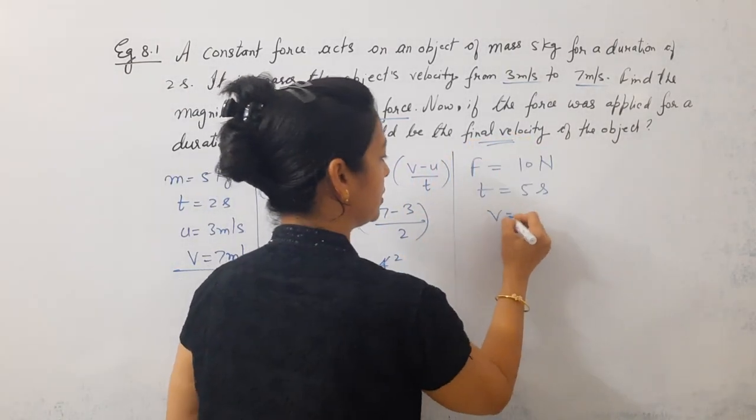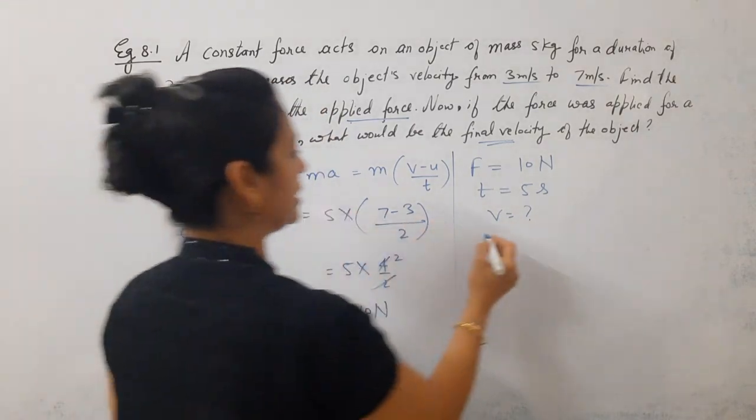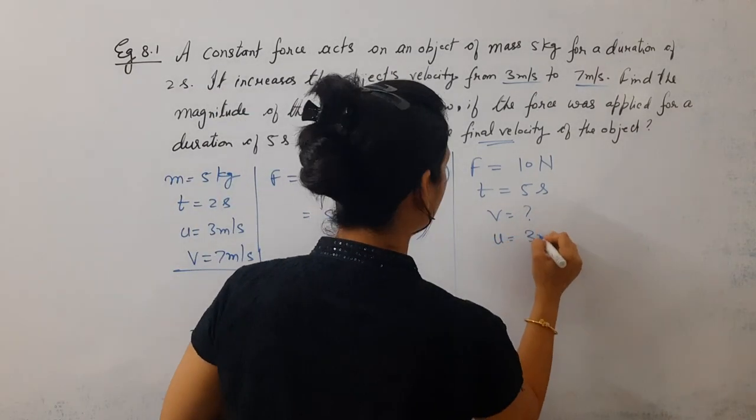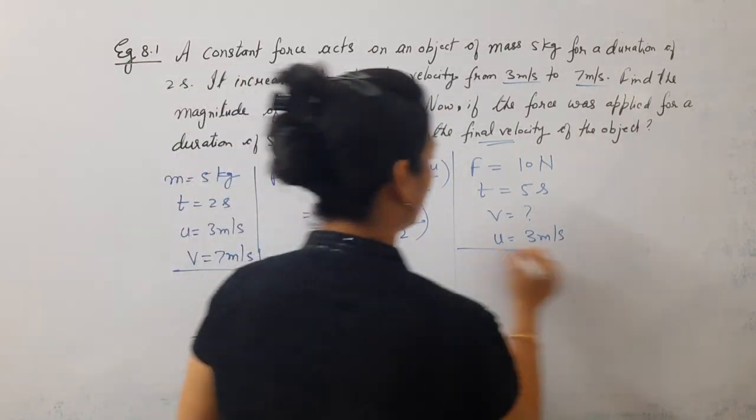What will be the final velocity? This means the initial velocity will be the same as before. What was the initial velocity? 3 meter per second. That will remain the same. Now look, what formula do we apply?